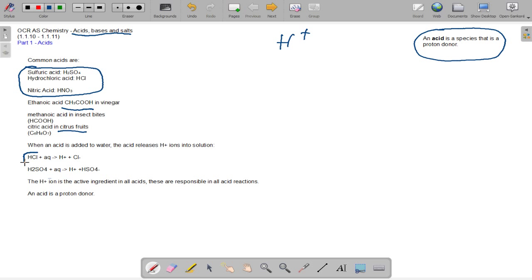What an acid basically does is when it's added to water, it releases two ions, a Cl minus ion and a H plus ion for hydrochloric. Most importantly, they always release H plus ions. The H plus ions are the active ingredient in all acids and are responsible for all acid reactions.